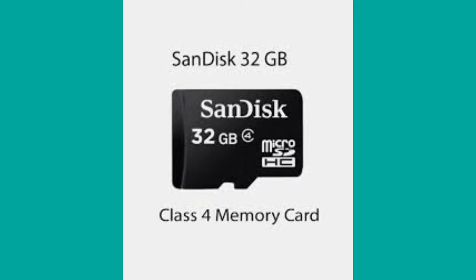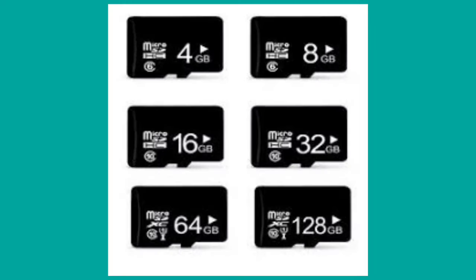Memory cards have high storage capacity and provide faster access to data. Mass storage refers to storing enormous amounts of data in a permanent manner. Mass storage devices can store up to several trillion bytes of data, are easily portable, and have low power consumption. Commonly used mass storage devices include disk arrays, automated tape libraries, CD-ROM jukeboxes.